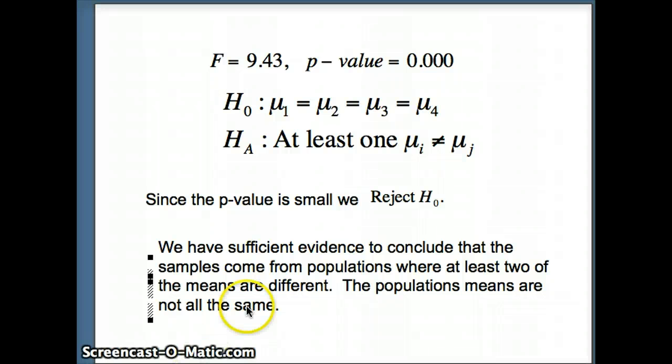Okay, the relevant information from Minitab was the F-statistic was 9.43. And the P-value was 0.000. And that of course is a small P-value. So if it's a small P-value, we reject H-naught.